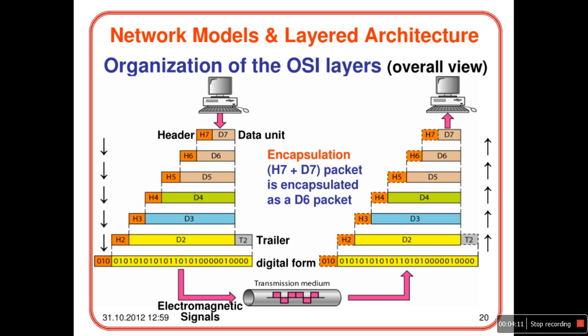You have the data unit D7, to which the header H7 is attached at the application layer. This H7 plus D7 unit is encapsulated onto D6 — that is, D6 is the combination of H7 and D7 — at the presentation layer, and the header H6 is added. This process continues down to the data link layer where a trailer is added along with the header. At the physical layer it is transformed into binary format.